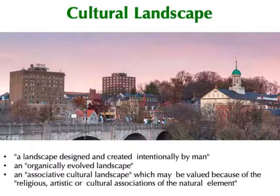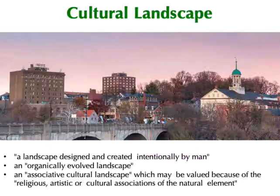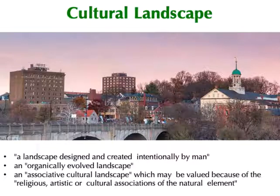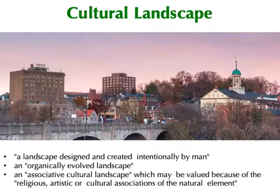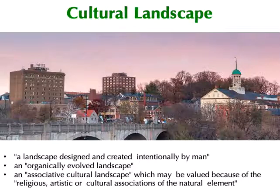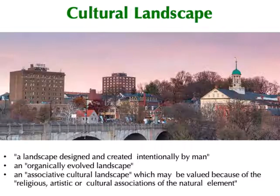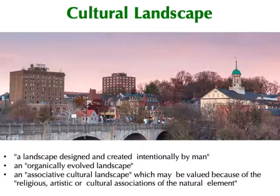According to UNESCO, there are two subtypes of ecologically evolved landscapes: ancient landscapes that are no longer a living space but whose original characteristics are still visible — this would include archaeological sites — and active landscapes, which conserve an active social role in contemporary society associated with traditional lifestyles and are still continuing to evolve. This would be pretty much any urban or rural landscape being actively lived in by human beings. And then there are associate cultural landscapes, in which powerful religious, artistic, or cultural associations exist within the natural surroundings.